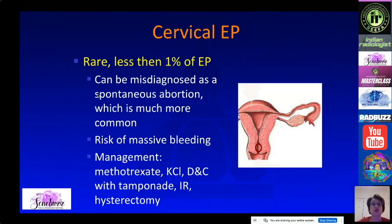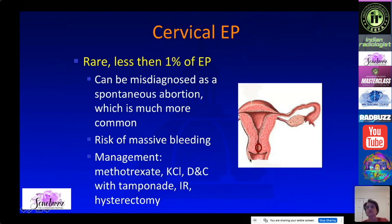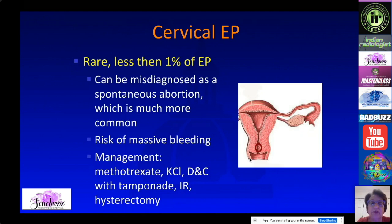Another less common type is cervical ectopic pregnancy, where implantation occurs in the cervix. The main differential diagnosis is a spontaneous abortion in progress, which is much more common. These also carry a massive risk of bleeding if not managed accurately, and management is usually methotrexate or KCL injection.